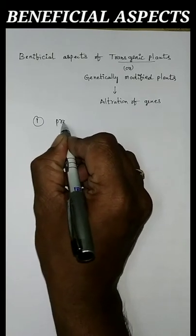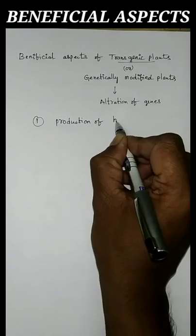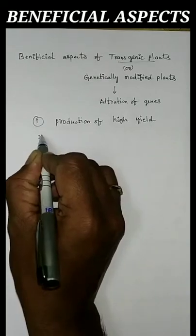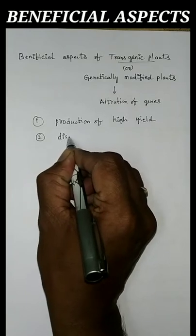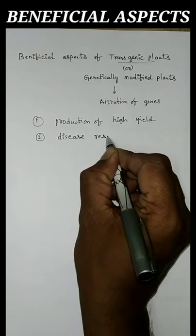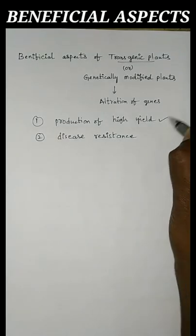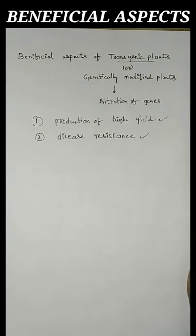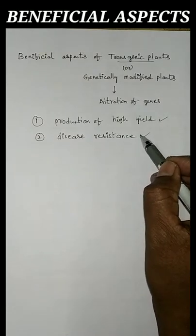The main useful functions of transgenic plants or genetically modified plants are: they are useful in production of high yield, and second, they are useful in disease resistance. In addition to these two main useful aspects, they have some additional functions.